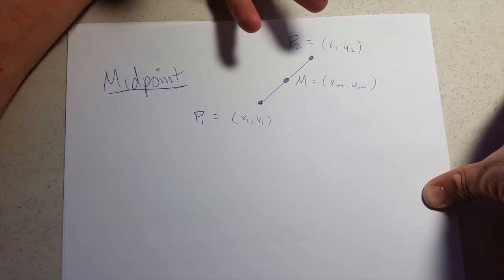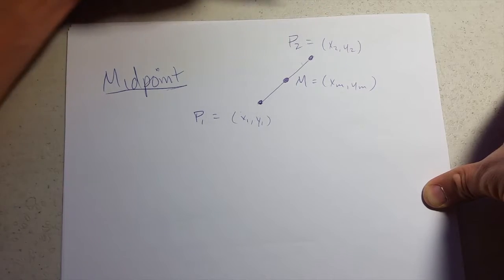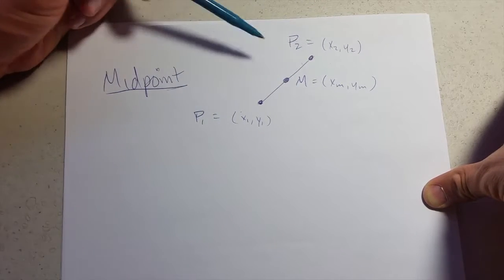If you take two numbers and average them, you get the number that is directly in between. So all this midpoint is, is an average of P1 and P2.